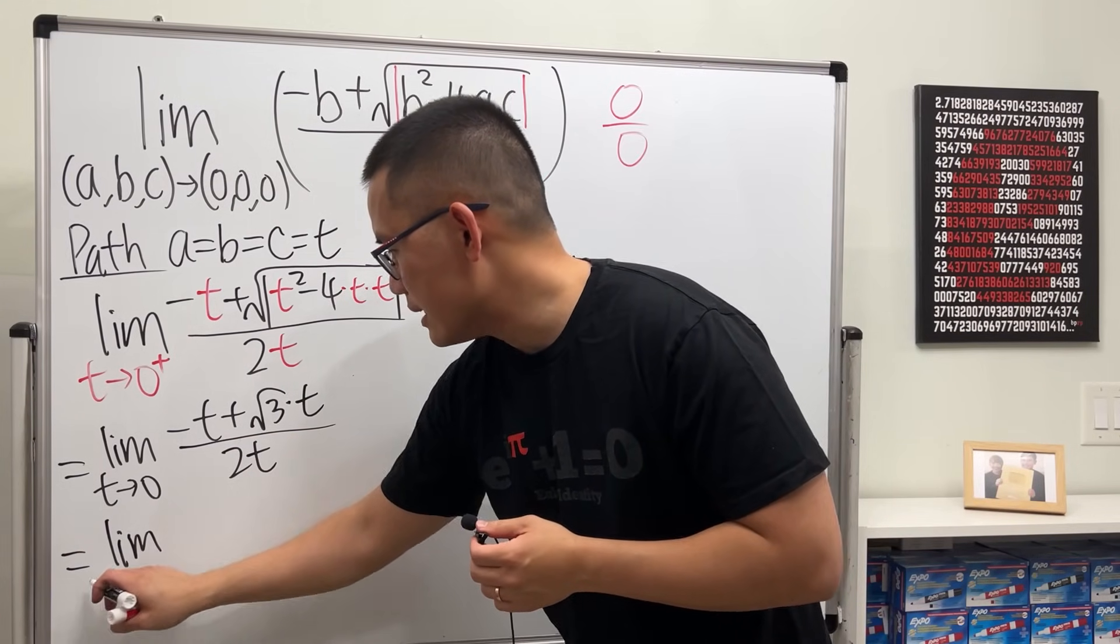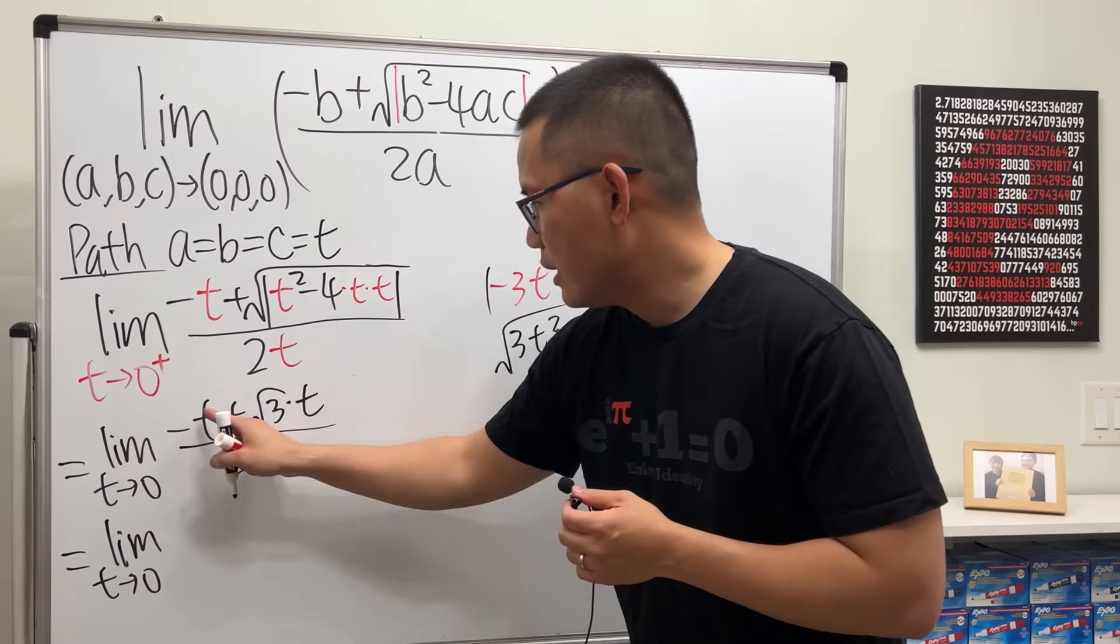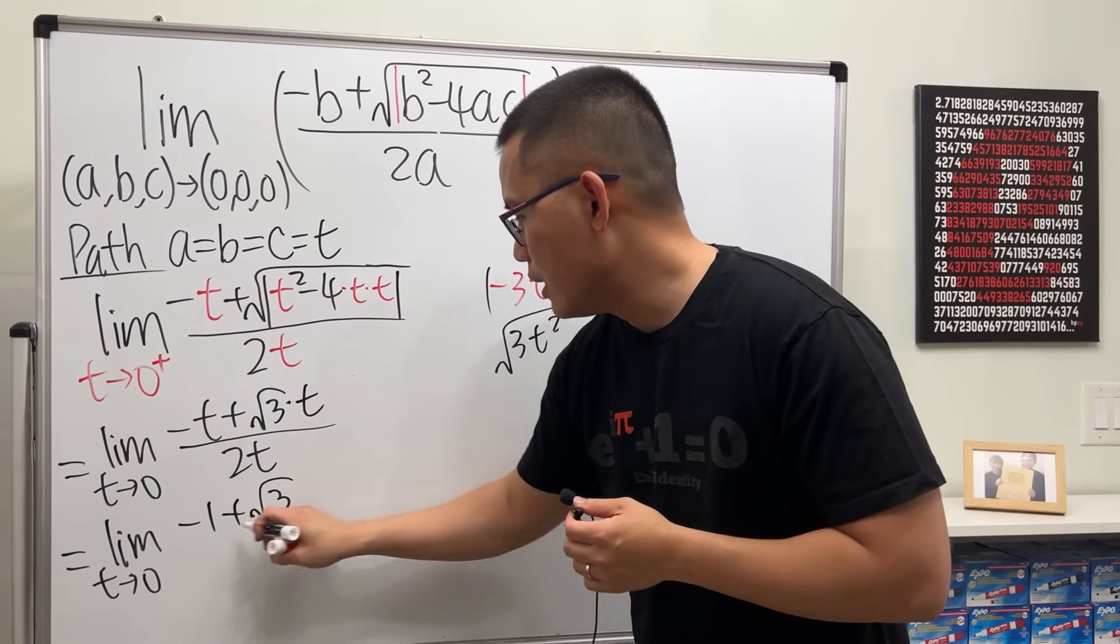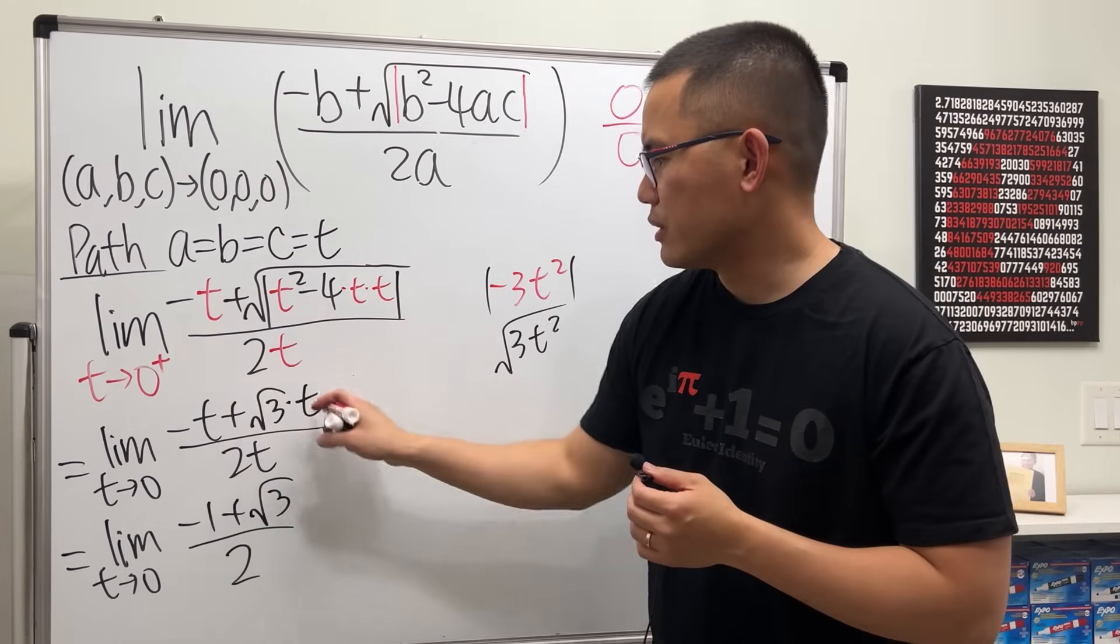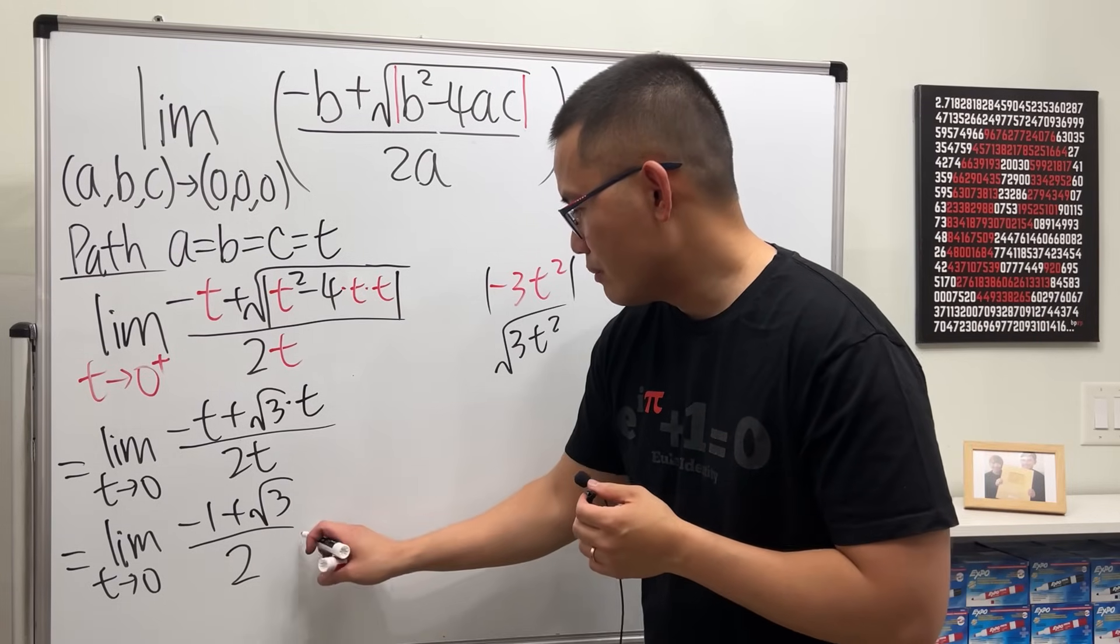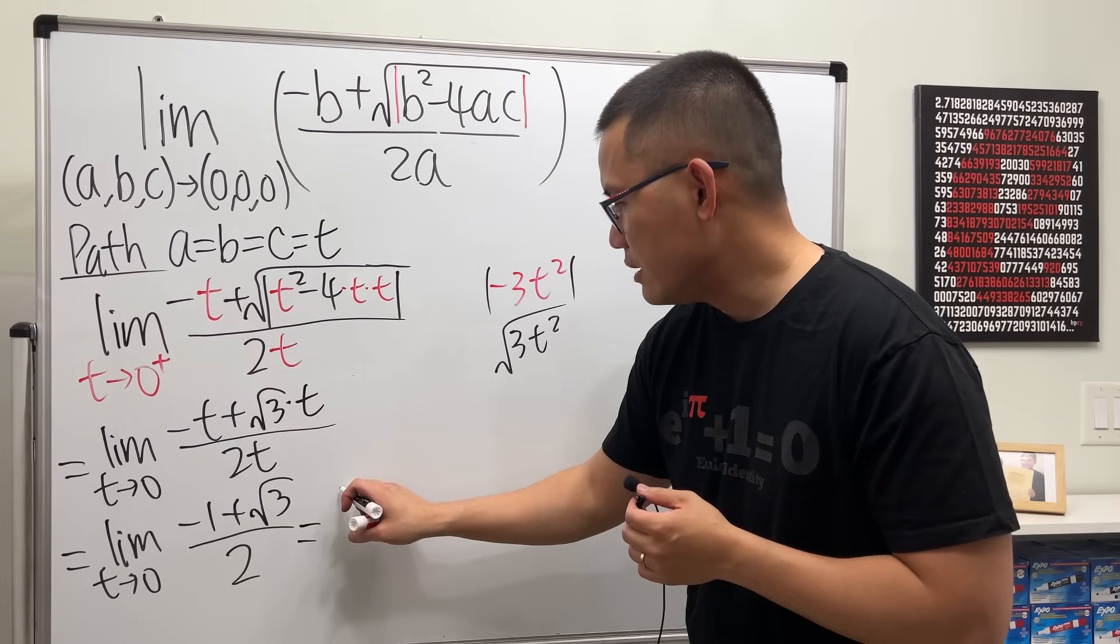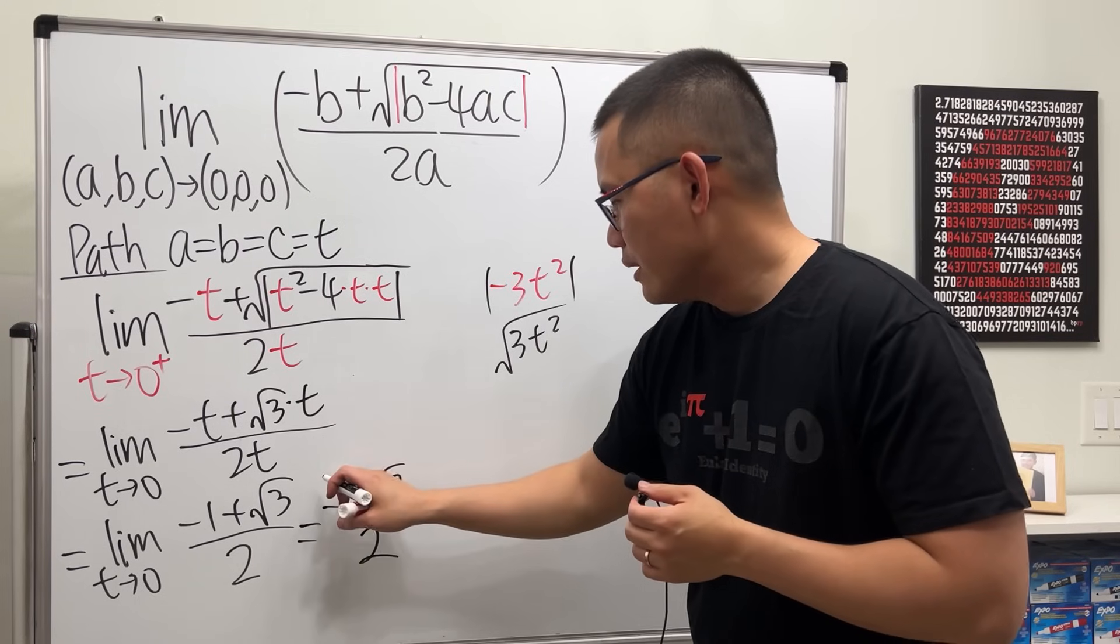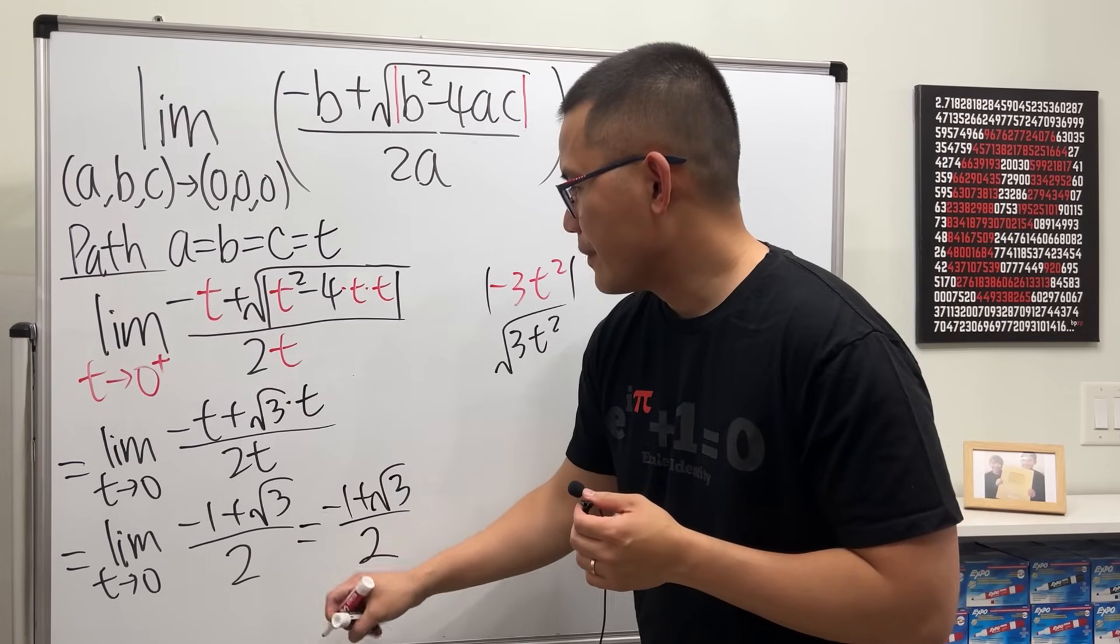And then you see we can cancel all the t's. So this right here is just limit as t goes to zero. Here we get negative one plus, here is square root of three over two, right? Just cancel all the t, so we have that.